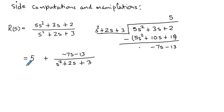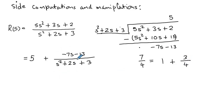This 5 plays the role of the whole number (like 1 in the arithmetic example), and −7s − 13 over s² + 2s + 3 is the proper fractional part, since the power of s in the numerator (1) is less than the power in the denominator (2). To expand this proper fraction into partial fractions, we must check if the denominator can be factorized. It cannot, so we complete the square. Taking half the coefficient of the linear term: 2 over 2 = 1, and 1² = 1.